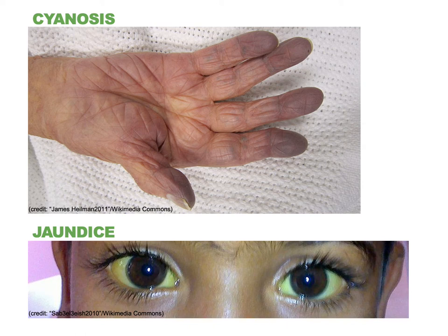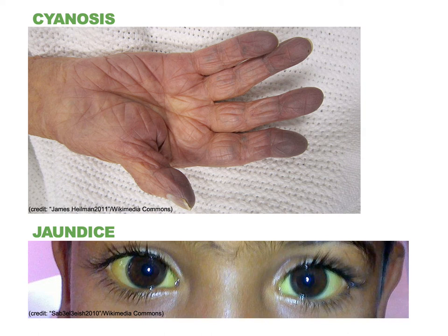Bilirubin is a chemical produced from the breakdown of hemoglobin. Jaundice is a condition where the skin turns yellow as a result of bilirubin accumulation. Jaundice can also be seen in the whites of the eyes — the sclera — as shown in the image. Jaundice may indicate impaired liver function; however, it is fairly common in newborns because the liver is overwhelmed by the breakdown of fetal hemoglobin. This neonatal jaundice is commonly treated with phototherapy, which breaks down bilirubin into a water-soluble form that can be excreted by the kidneys.